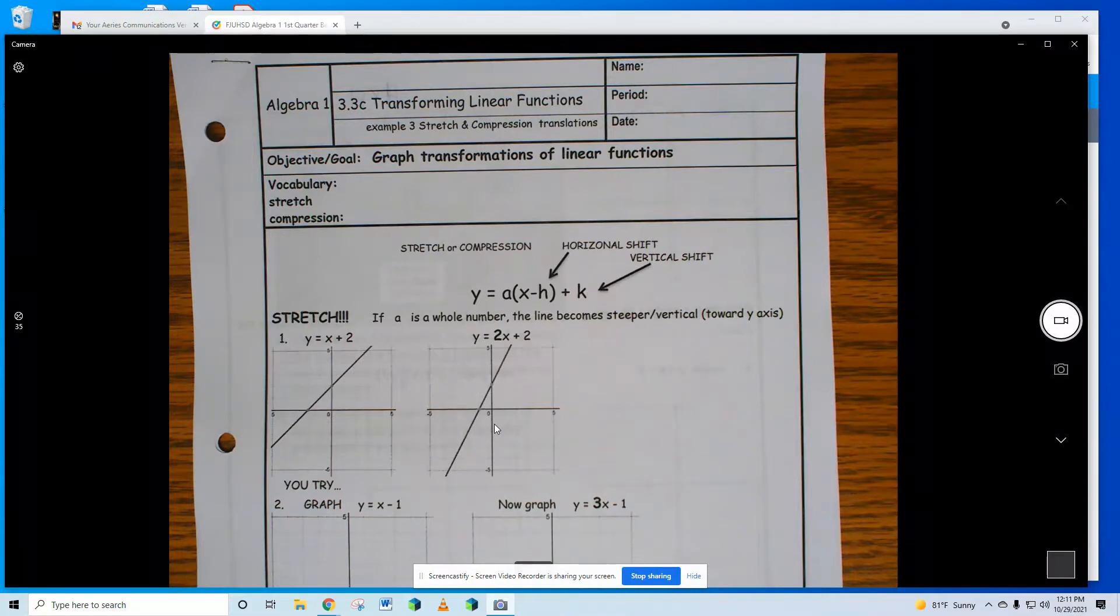The number at the very end, the k, moves and shifts the graph. It translates it up or down. Day one we learned about k going up or down. Day two we learned about h going left or right. Can you guys close your Chromebooks because you're not paying attention?